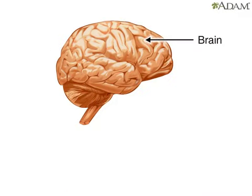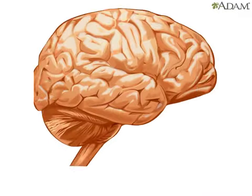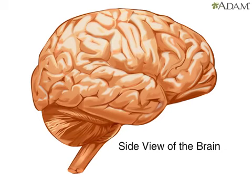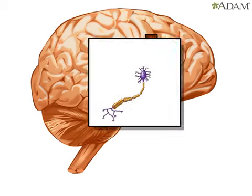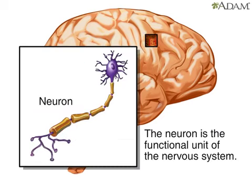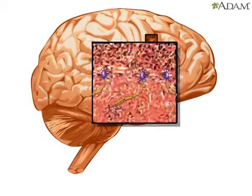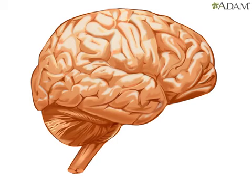The brain is composed of more than a thousand billion neurons. Specific groups of them, working in concert, provide us with the capacity to reason, to experience feelings, and to understand the world. They also give us the capacity to remember numerous pieces of information.